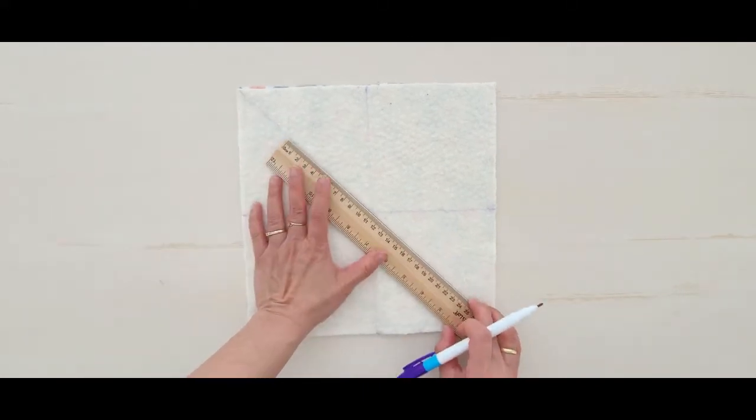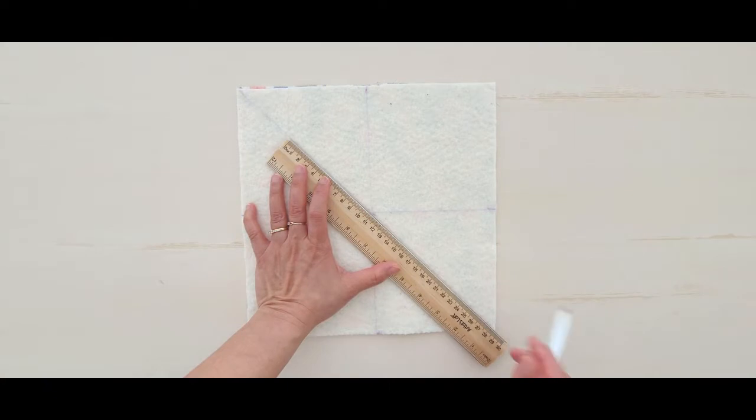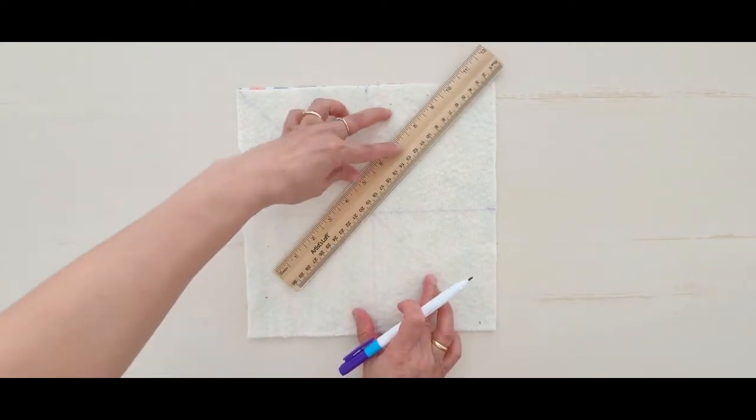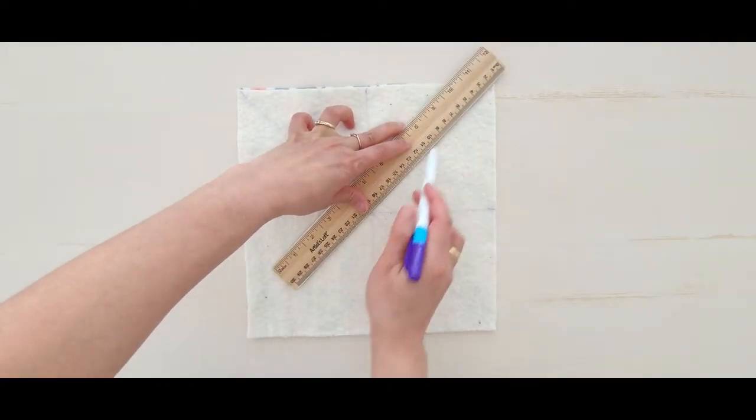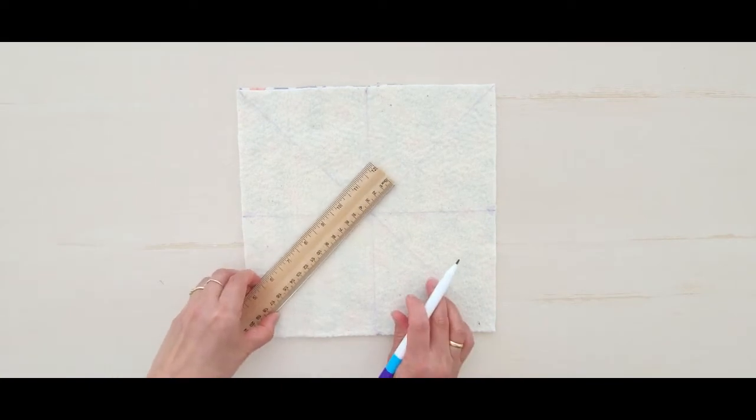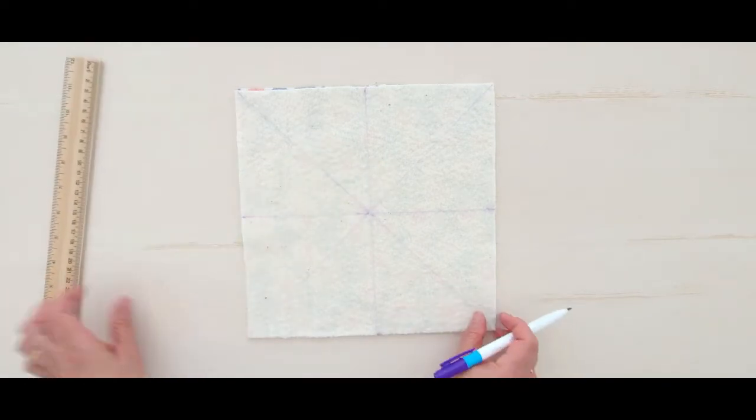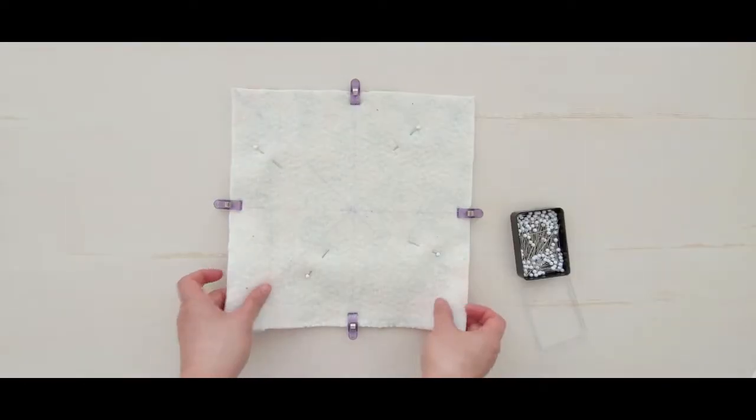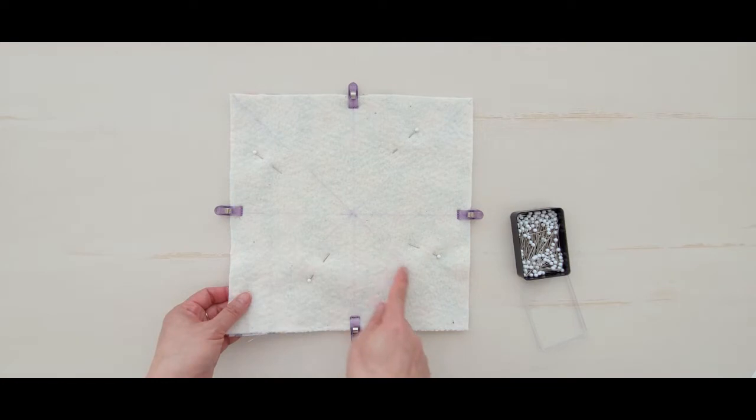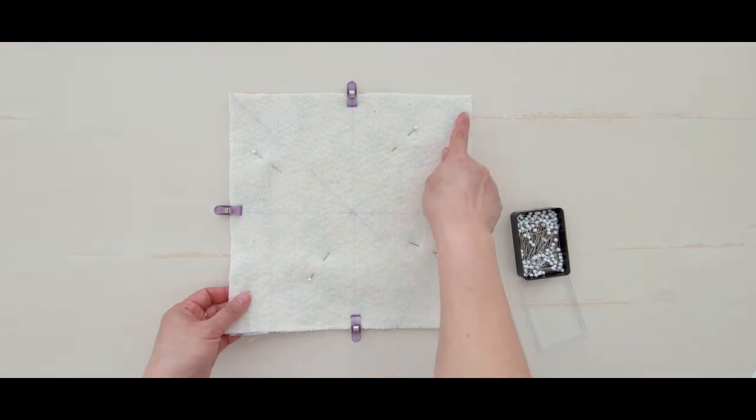Mark diagonal lines to connect each corner, then sew along both diagonal lines.